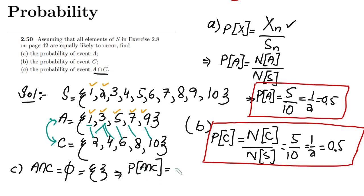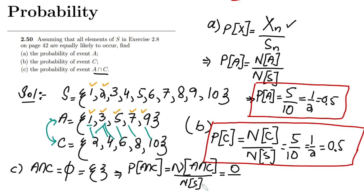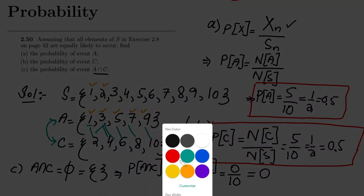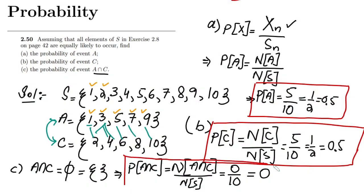To find the probability of A intersection C, I find the number of elements in A intersection C divided by the total number of elements in the sample space. Since the number of elements in A intersection C is zero and the number of elements in S is 10, the probability of A intersection C is zero. That is the answer. I hope you have understood the basic concept of these types of questions. See you soon.